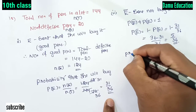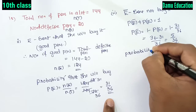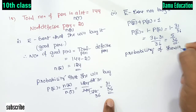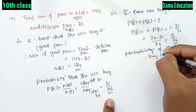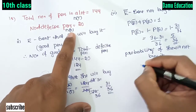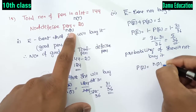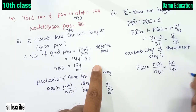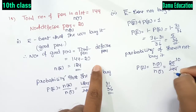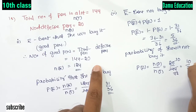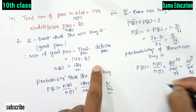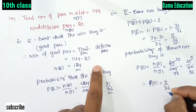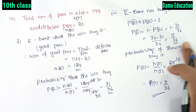Another method — probability that she will not buy it means the defective pens. So P(D) equals N of D divided by N of T, that is number of defective pens divided by total number of pens: 20 by 144, which simplifies to 10 by 72, then to 5 by 36. That is the probability of the defective one — she will not buy — is 5 by 36.